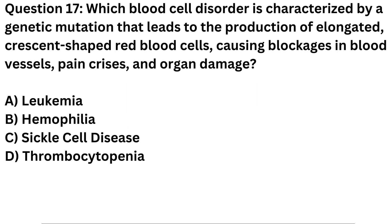Question 17. Which blood cell disorder is characterized by a genetic mutation that leads to the production of elongated, crescent-shaped red blood cells, causing blockages in blood vessels, pain crises, and organ damage? A. Leukemia. B. Hemophilia. C. Sickle cell disease. D. Thrombocytopenia.